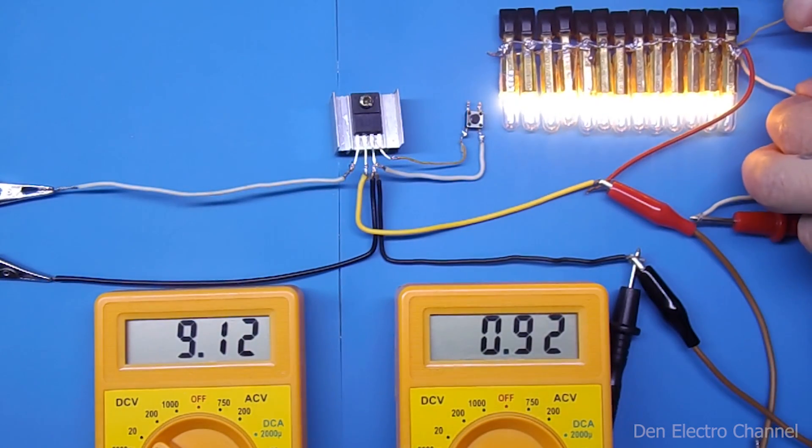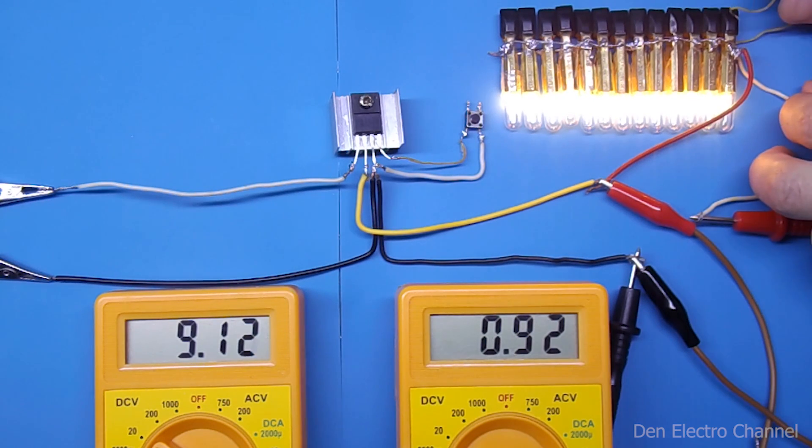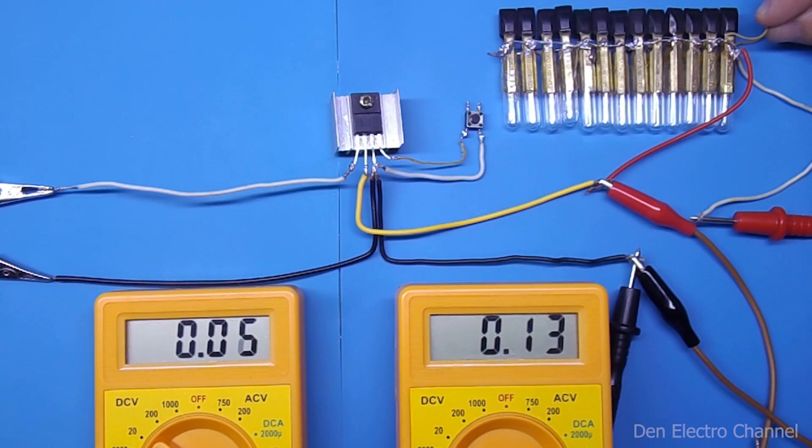I took a piece of wire and short circuited the light bulbs with it. And look what happens. The voltage dropped to almost zero, and the current was only 130 milliamps.